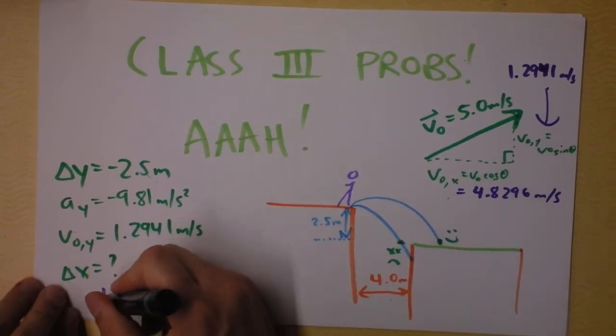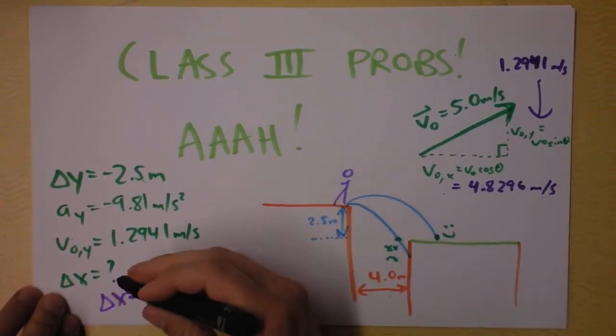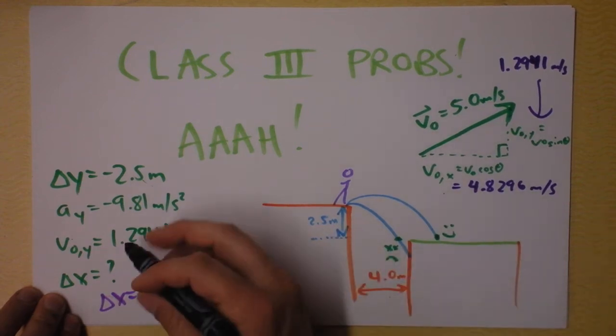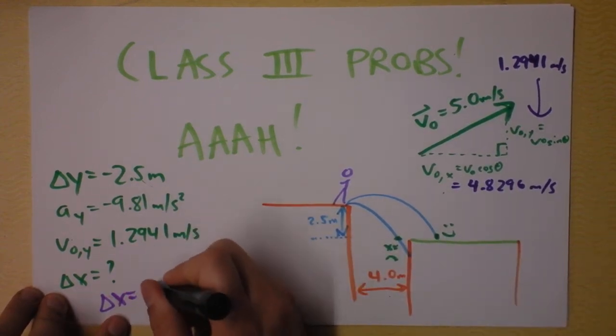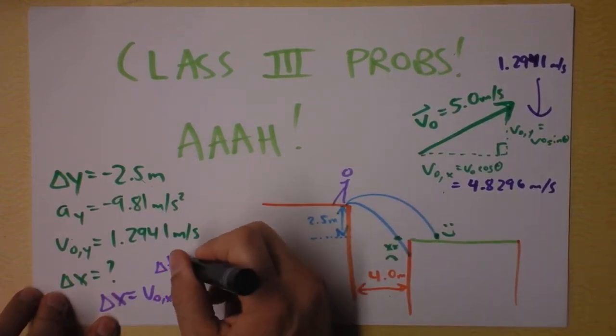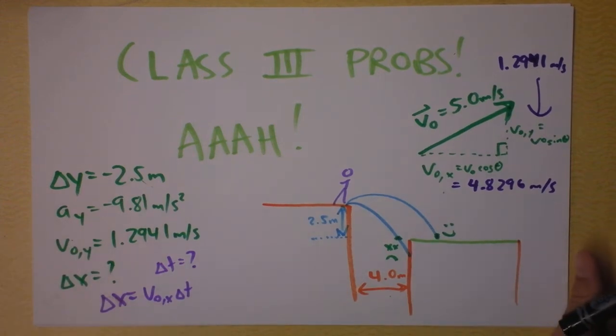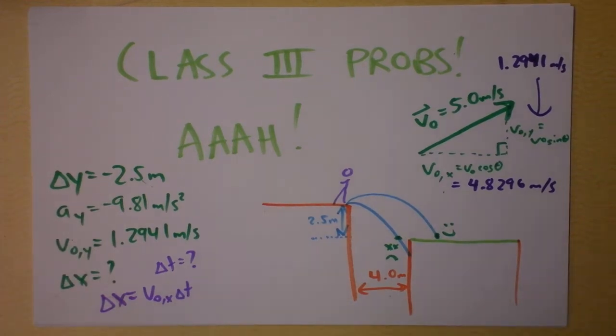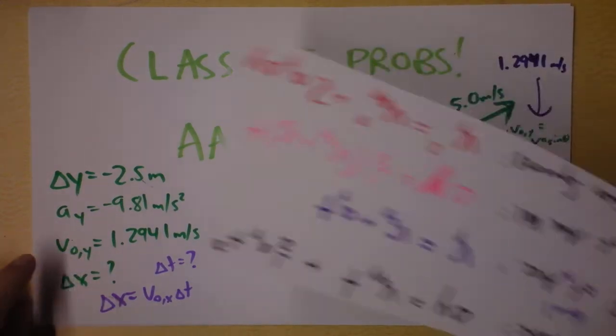In order to find delta x, we need an equation in x, and there's only one. It says delta x is the initial velocity in the x direction times delta t, and we don't know delta t. So now we're on a side quest to find out how long it takes for this to happen. And if I'm looking at my kinematic equations, I'll go get them. They're over here. Kinematic equation, where are you?